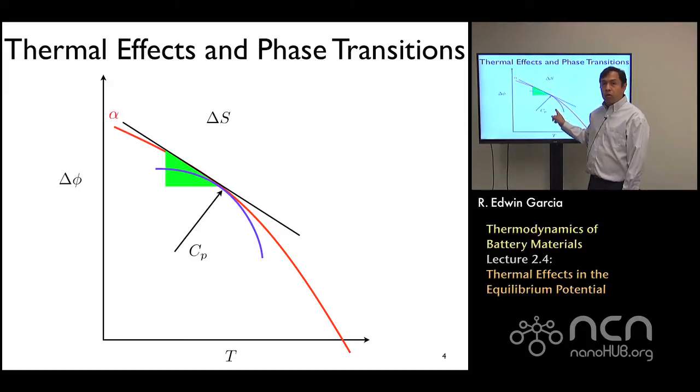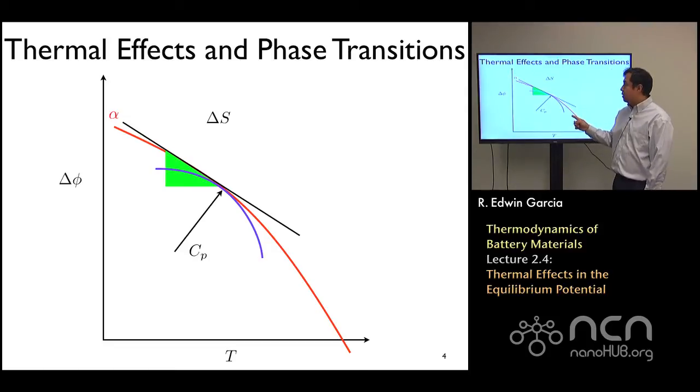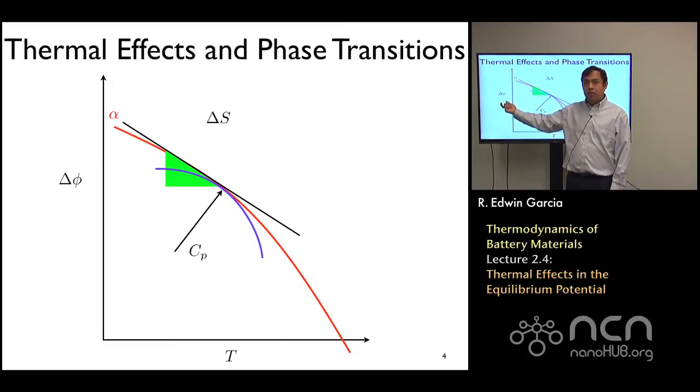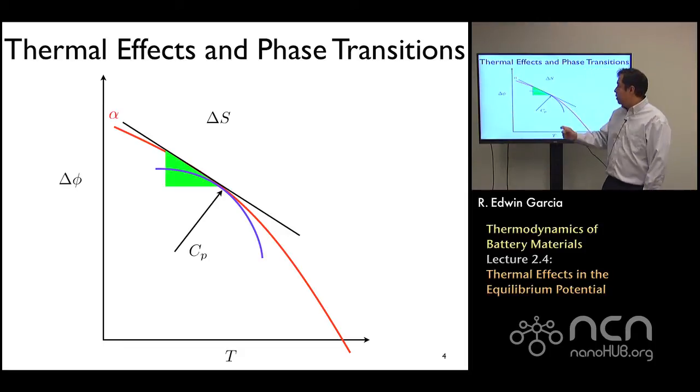And we can also measure the heat capacity of the system by measuring what the local curvature of the system is, related directly to the expression that you saw on the previous slide. This gives us a very nice graphical representation when we make this experiment, not only as to what the properties of that voltage are, but other intrinsic properties such as entropy and heat capacity that can be used to specify the transport and additional stability contributions from the system.